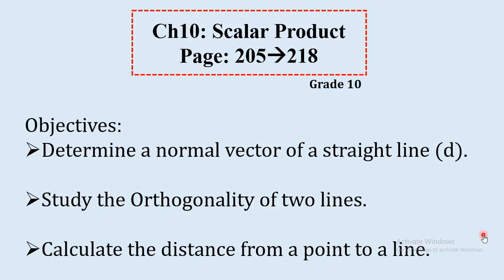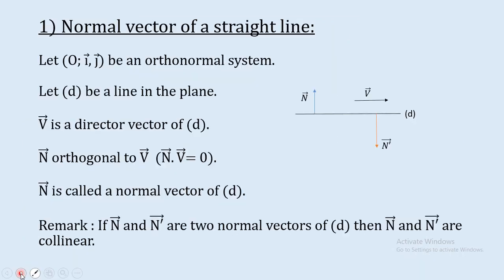Assalamu alaikum. Today, we will continue the explanation of chapter 10, scalar product. The objectives of this session are: determine a normal vector of a straight line d, study the orthogonality of two lines, and calculate the distance from a point to a line.